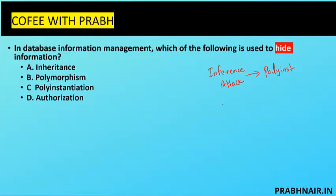And when we're talking about aggregation attack, the answer is always polymorphism — remember that from an exam point of view, never forget. Now the question asks: in database information management, which is used to hide information? It means I want to disguise the user.